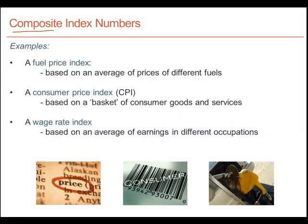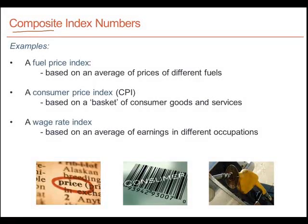Or, one final example, we could have a wage rate index. Every so often, we read in the business pages of the media that average wage rates increased in the economy by a certain percentage year over year. But, of course, there are many different kinds of jobs, and these different jobs all pay different wage rates. So, when we say that a national wage index has increased by a certain percentage, we're implicitly averaging over the wages of different kinds of workers, or wages paid in different sectors, trades, and skills.